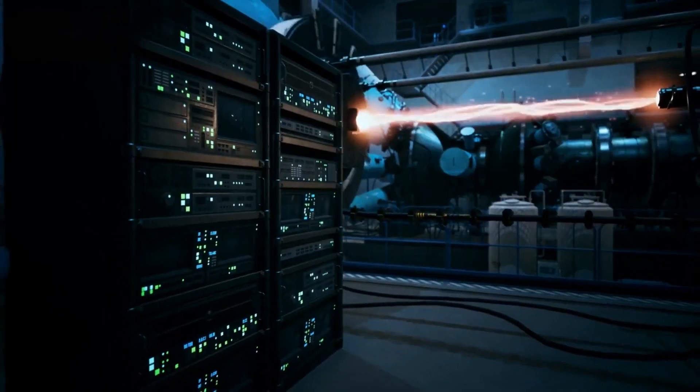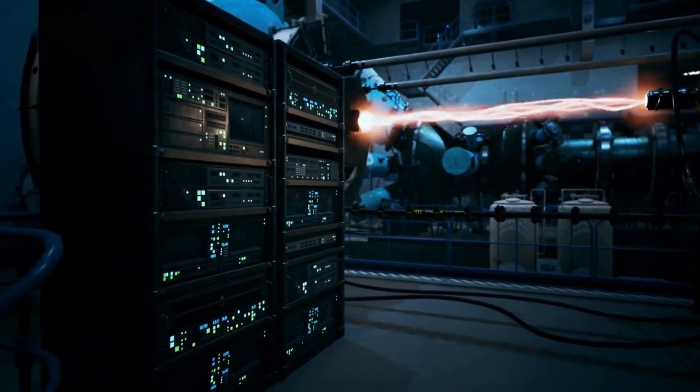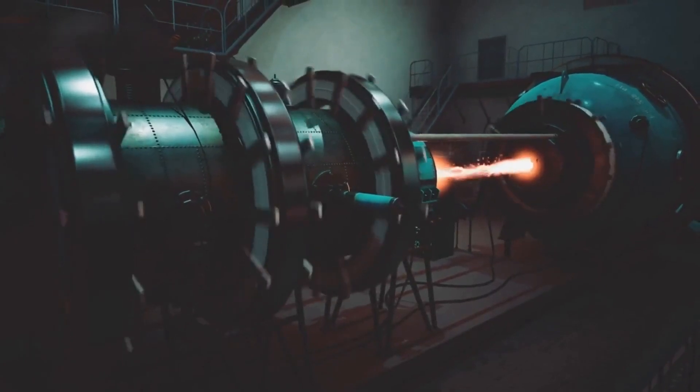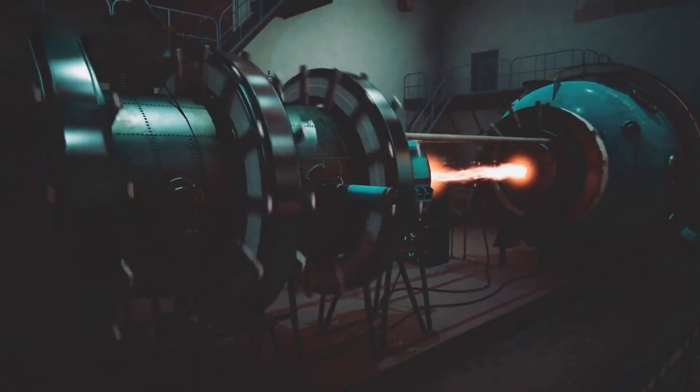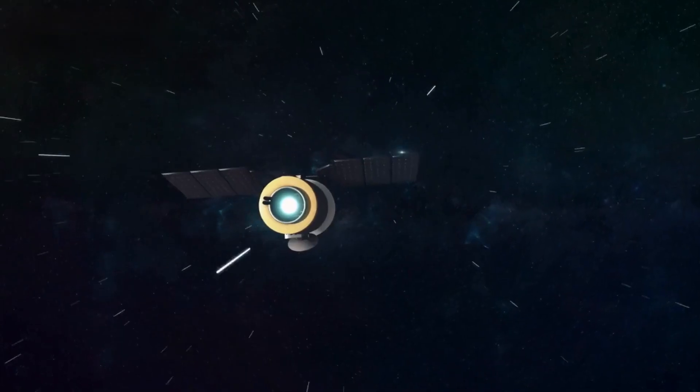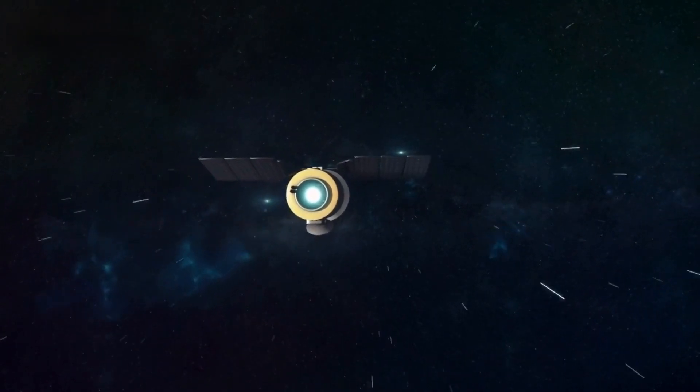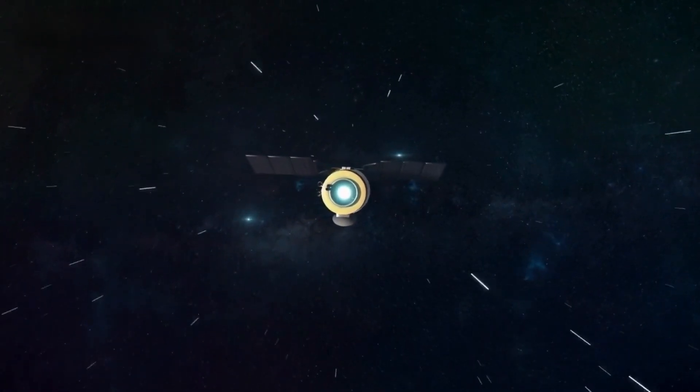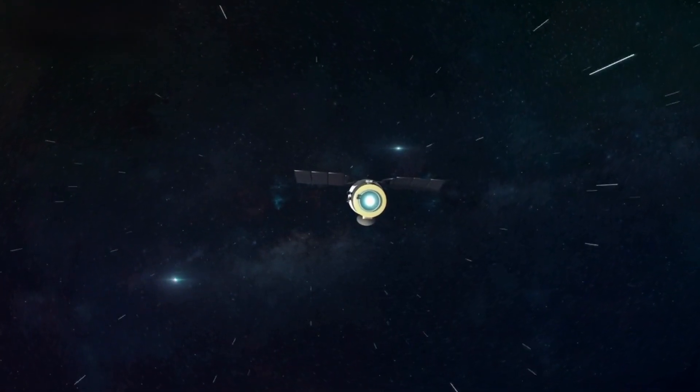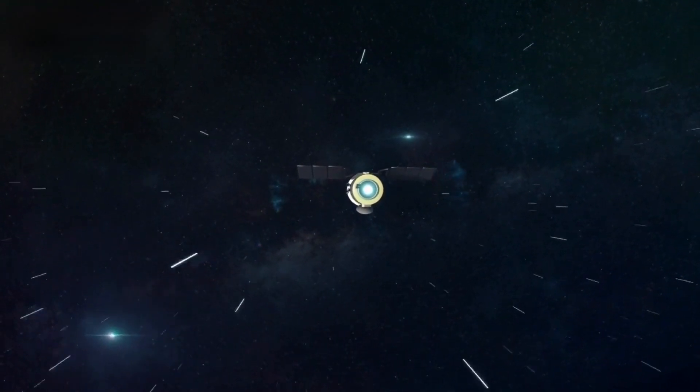Compared to conventional ion engines, the fusion engine offers a significant leap in terms of efficiency and speed. Traditional ion engines provide moderate thrust due to limitations in electrical power supply. In contrast, the fusion engine's utilization of ionized plasma allows for significantly higher speeds. While conventional ion engines achieve speeds ranging from 20 to 40 kilometers per second, the fusion engine can propel spacecraft at velocities between 110 to 350 kilometers per second.